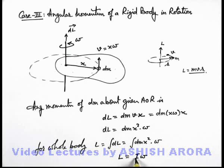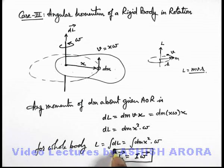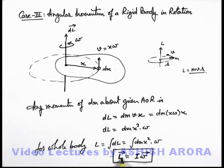Treating moment of inertia as a scalar, the direction of the angular momentum vector is along the direction of angular velocity. So for a rotating rigid body, angular momentum can be given as the product of moment of inertia and angular velocity: L = Iω.